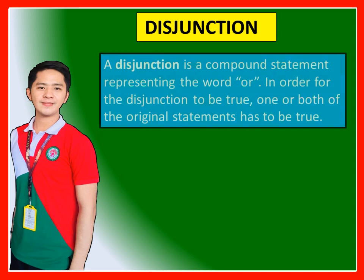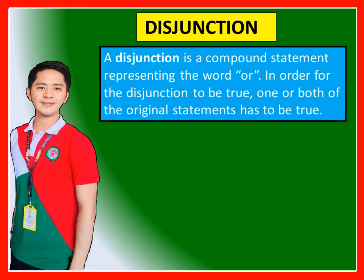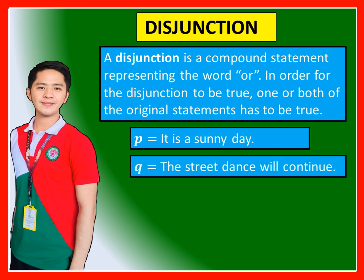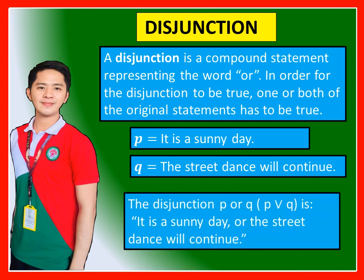Disjunction: A disjunction is a compound statement representing the word 'or.' In order for the disjunction to be true, one or both of the original statements must be true — in other words, at least one of the components must be true. When P is 'It is a sunny day' and Q is 'The street dance will continue,' the disjunction P or Q is: 'It is a sunny day or the street dance will continue.'